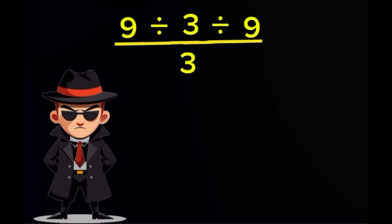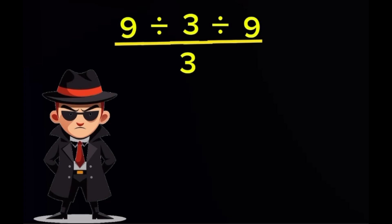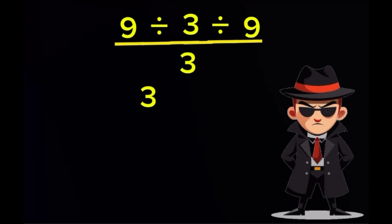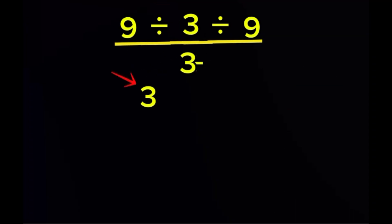We are going to solve this the correct way. Begin from the left side. 9 divided by 3 gives 3. Do not stop there. Keep moving to the right. 3 divided by 9 gives 1 third. At this point, the entire top part of the expression becomes 1 third and nothing else.